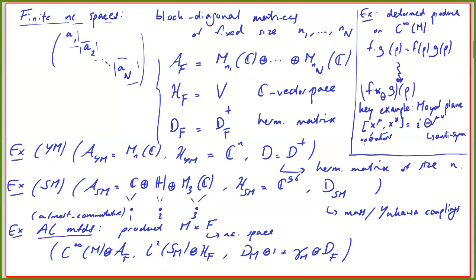One can construct C∞(R^d)_θ deformed with this matrix θ, and it can act in a deformed way on L²(spinors on R^d) with the standard Dirac operator D of R^d. This package is shown to be a spectral triple. There is also a grading and real structure if you wish, but the important point is that it's possible to deform the algebra while keeping the Hilbert space and the Dirac operator intact, and still have the structure of a spectral triple.